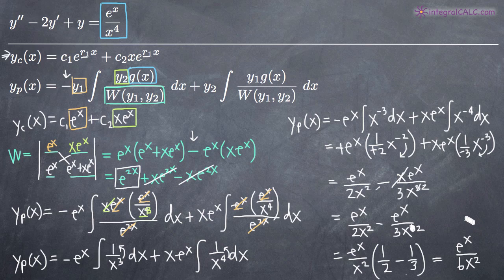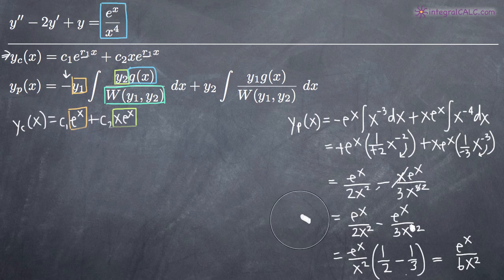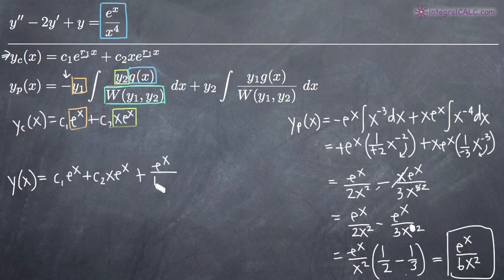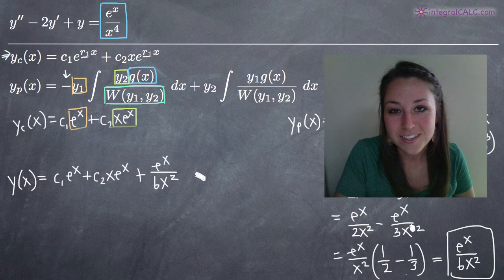Now that we have both solutions, we combine them. The final answer y of x equals the complementary solution plus the particular solution: c sub 1 e to the x plus c sub 2 x e to the x plus e to the x over 6x squared. And that's our final answer. I hope this video helped, and I'll see you in the next one.